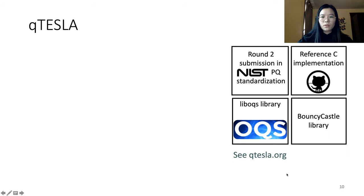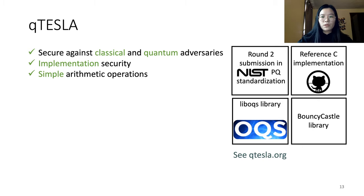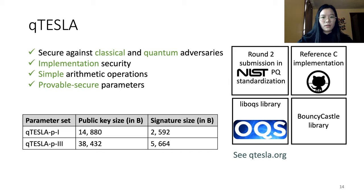Now let's take a look at the Q-TESLA scheme. Q-TESLA is a lattice-based signature scheme that was a second-round candidate in the PQC standardization effort, but it didn't advance to the third round. Its reference C implementation is already integrated in several open-source libraries. Q-TESLA is secure against both classical and quantum adversaries, and also against some implementation attacks such as side-channel and fault attacks. Another advantage is that it only uses very simple arithmetic operations, making it a perfect target for hardware acceleration. Most notably, Q-TESLA comes with provably secure instantiation, meaning security hardness is provably guaranteed as long as its corresponding RLWE instance remains secure. This leads, however, to rather large parameters as shown in the table.